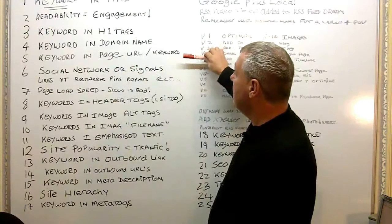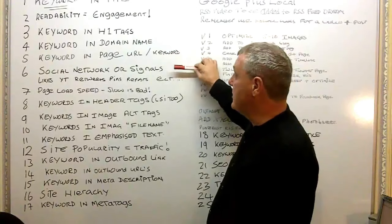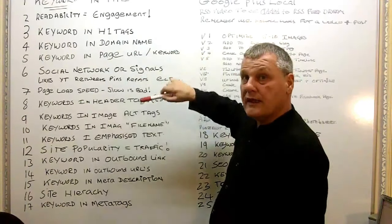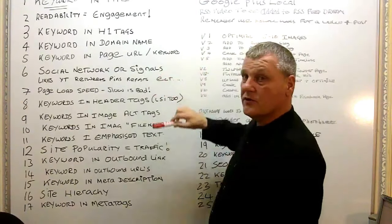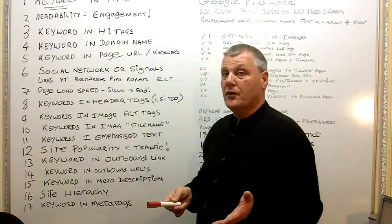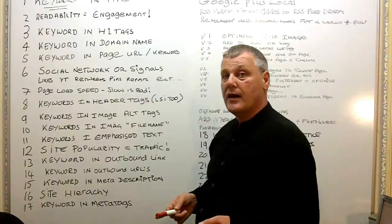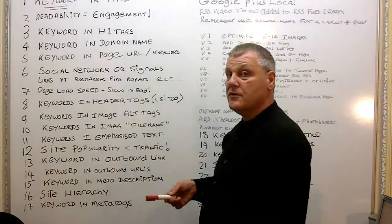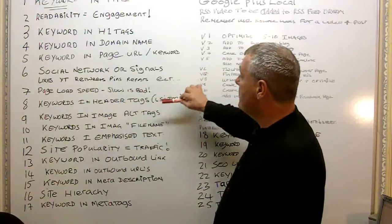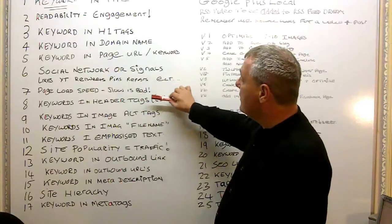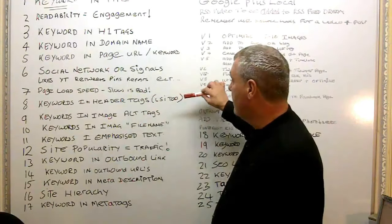Keyword in page URL is very important as well — every page URL on a different subject within that broad niche should have that keyword in the URL. Social signals are also very important. I've been going on about this for some time. We'll go back to the computer in a minute and see how important social signals actually are — likes, YouTube, retweets, pins, reposts, that's what we're looking for.